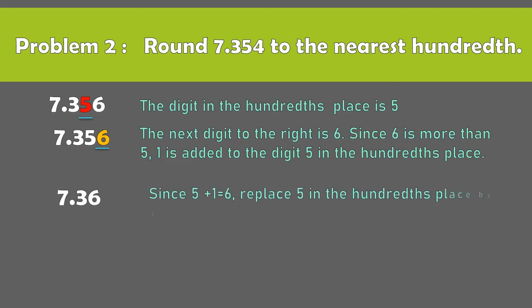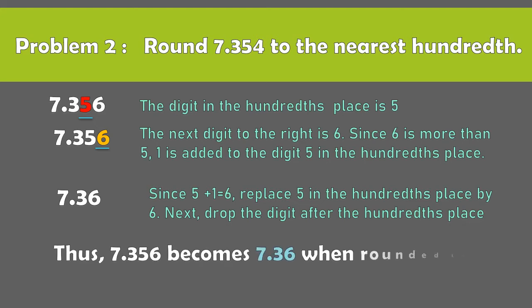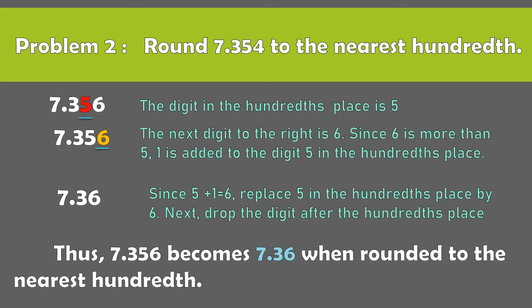Since 5 plus 1 is 6, replace 5 in the hundredth place by 6. Next, drop the digit after the hundredth place. Thus, 7.354 becomes 7.36 when rounded to the nearest hundredth.